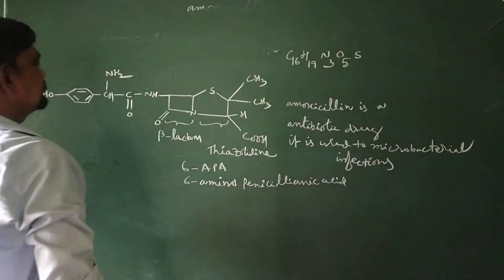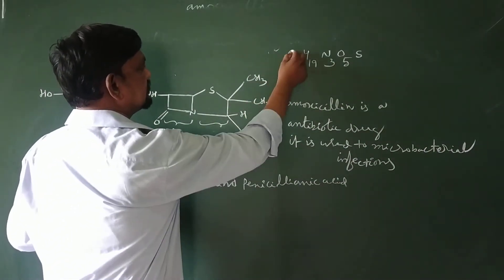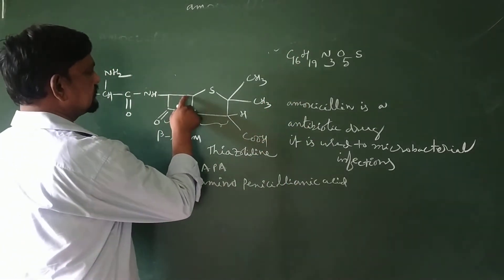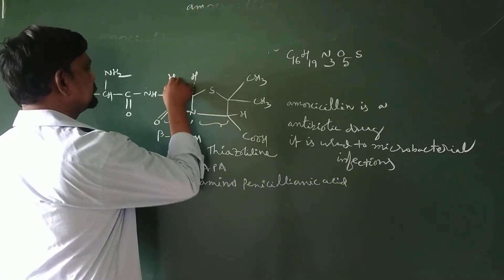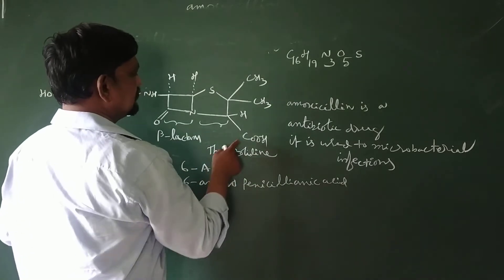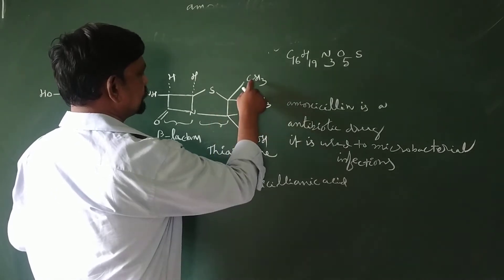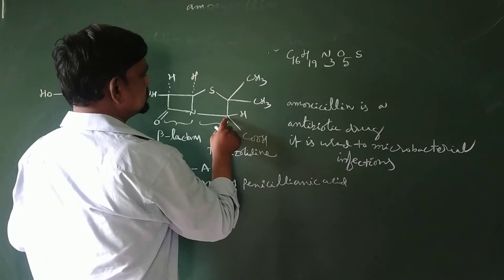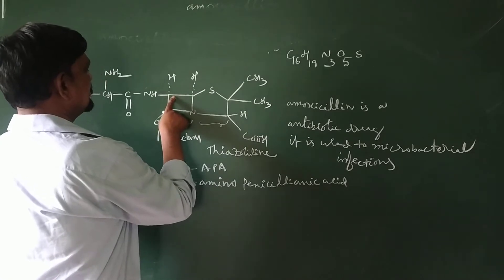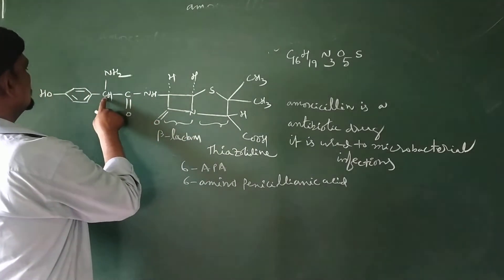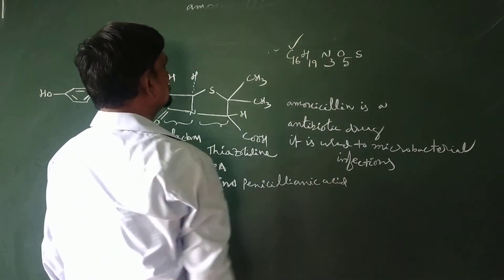The molecular formula of the structure is C16. Here also hydrogen is there — counting 1, 2, 3. Carbon counting: 1, 2, 3, 4, 5, 6, 7, 8, 9, 10, 11, 12, 13, 14, 15, 16 — so C16 is verified by tallying.